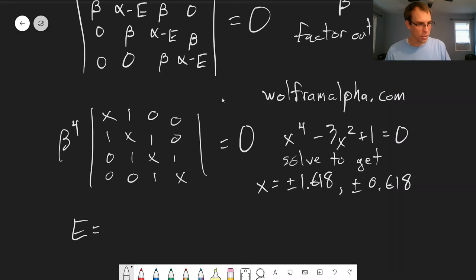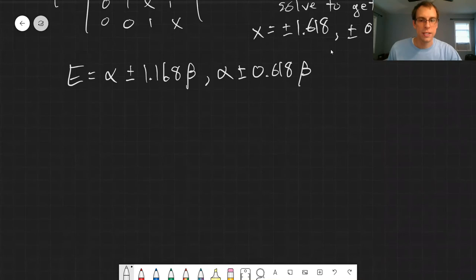If we remember that x is equal to alpha minus E over beta, what that tells us is that if we make that substitution, we get four different energies for our system. E is equal to alpha plus or minus 1.168 beta, or alpha plus or minus 0.618 beta.